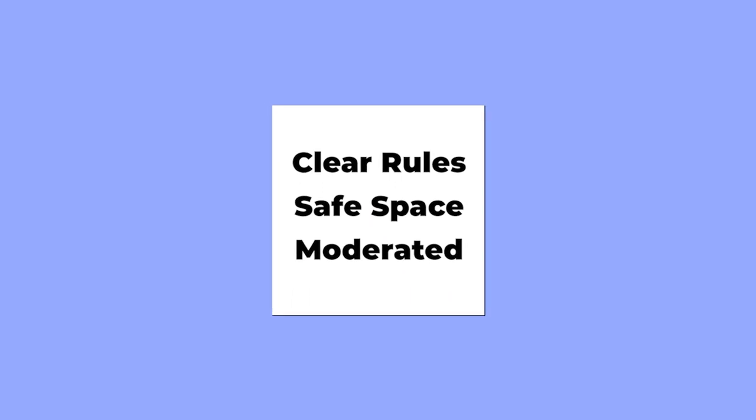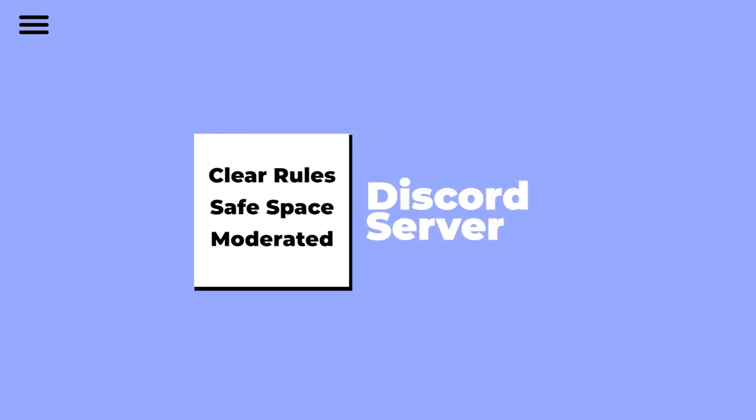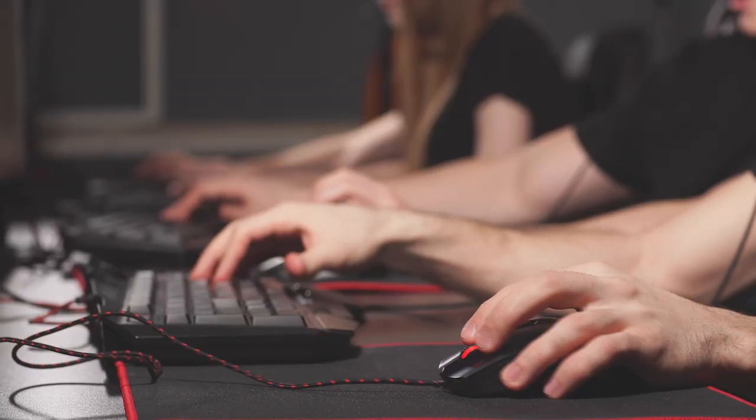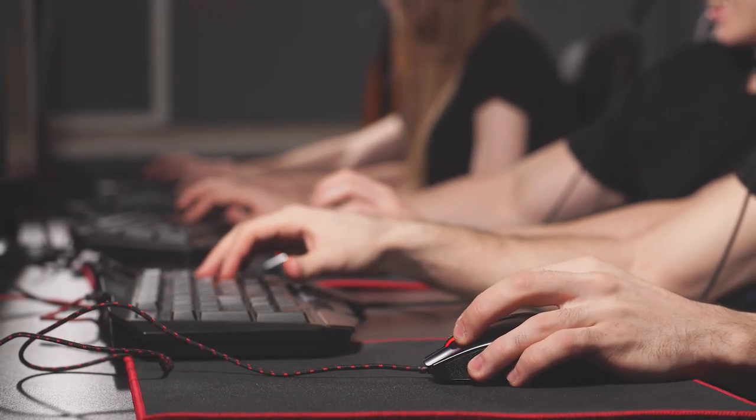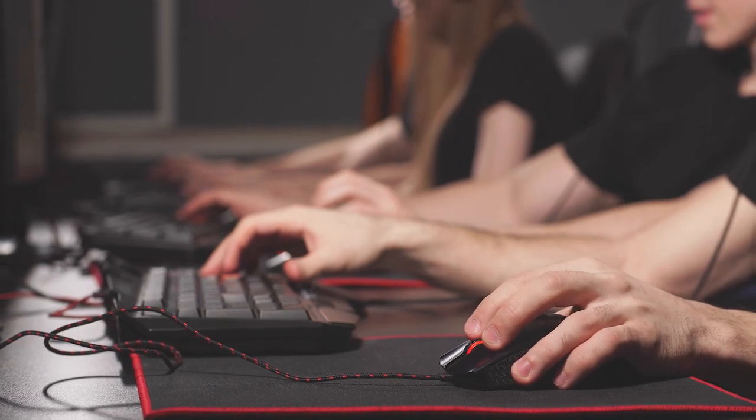Your Discord server needs a really good rule set. It needs to be really clear that you are setting an example as the server owner. You need to make sure there is no racism, no homophobia, no transphobia, and no abusive behaviors in your server. You need to take a zero-tolerance approach on that and be clear about it when people join — that there is no space for that type of activity.